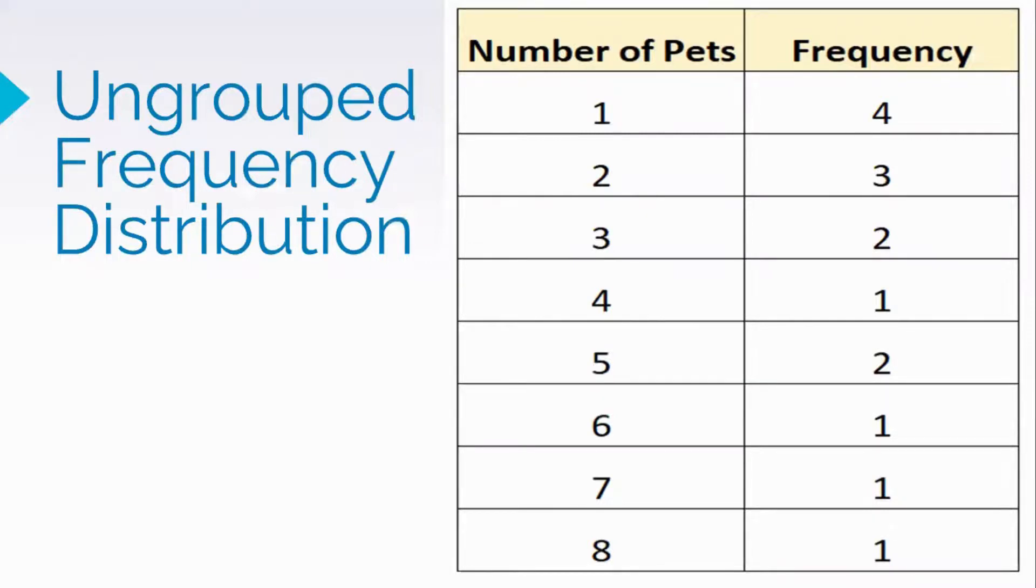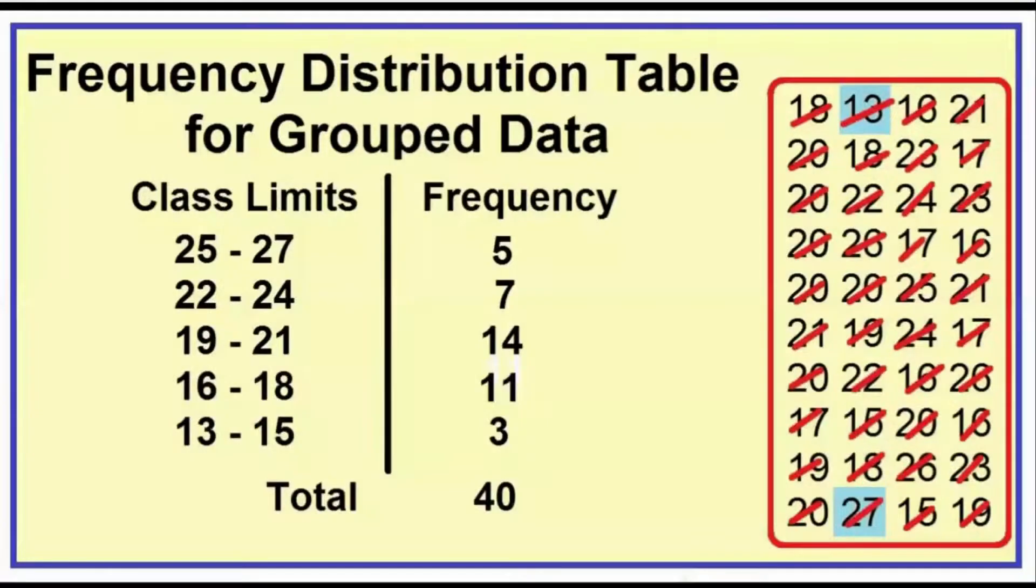In a grouped frequency distribution, the data are grouped into categories or classes, also called class intervals. Scores are assigned to mutually exclusive classes, which are defined in terms of grouping intervals employed. A score in the sample belongs to one and only one class interval.